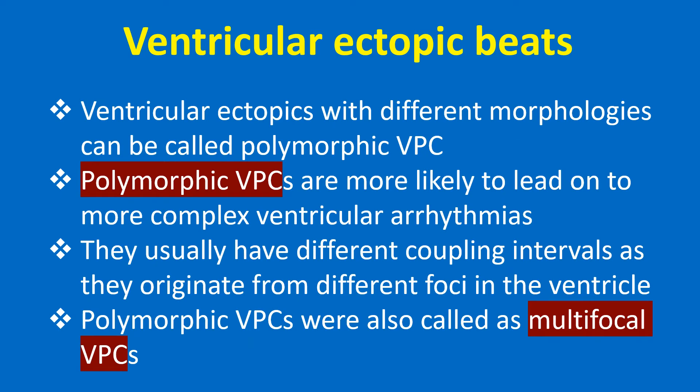Ventricular ectopics with different morphologies can be called polymorphic VPC. Polymorphic VPCs are more likely to lead on to more complex ventricular arrhythmias. They usually have different coupling intervals as they originate from different foci in the ventricle.